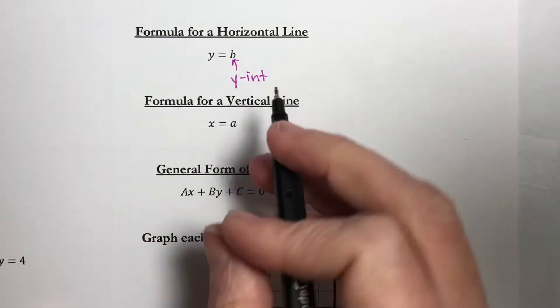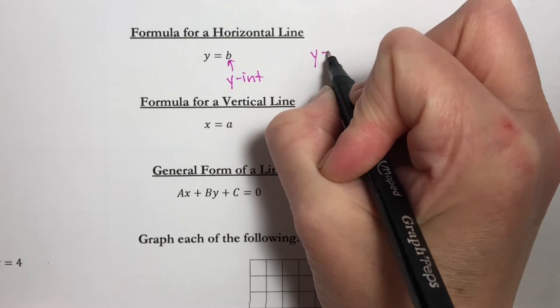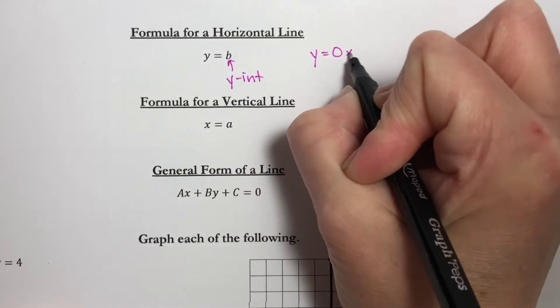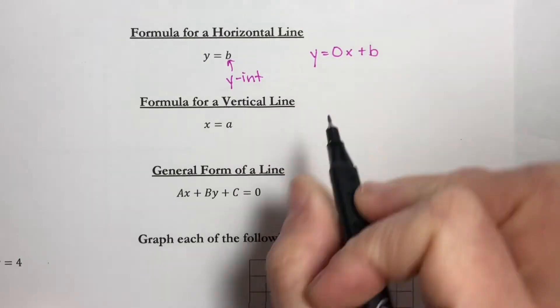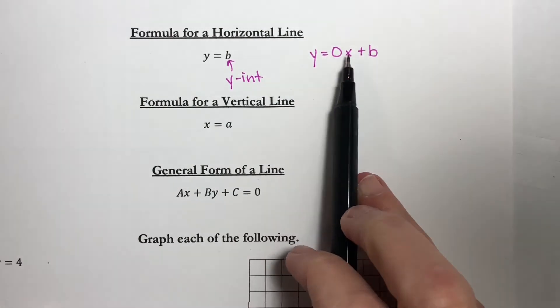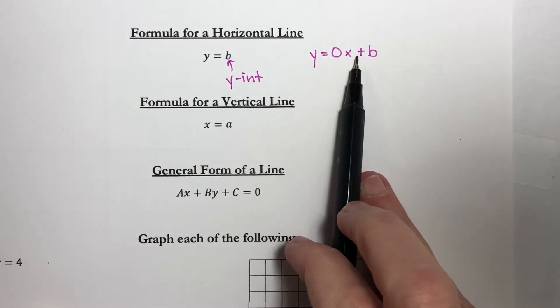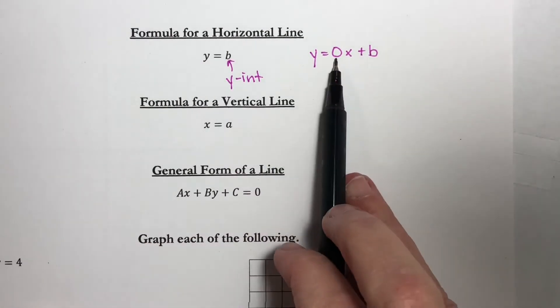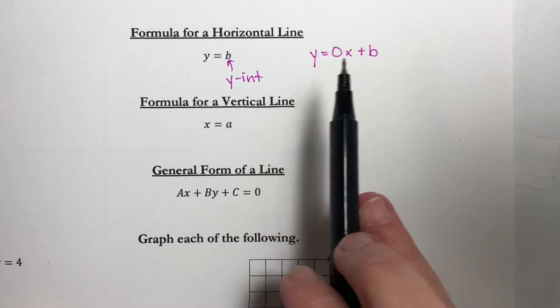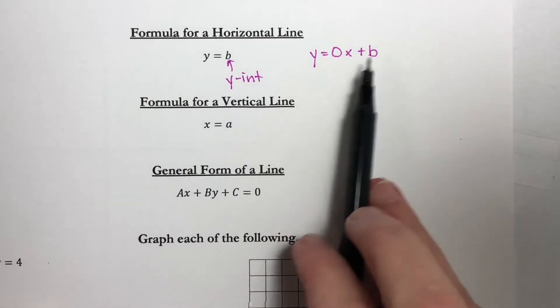Now let me just rewrite this in one little form. y is equal to 0x plus b. This is numerically the same as this, because we're multiplying x by 0, which is just 0. Adding 0 to b is still just b.